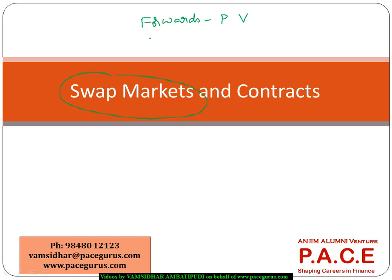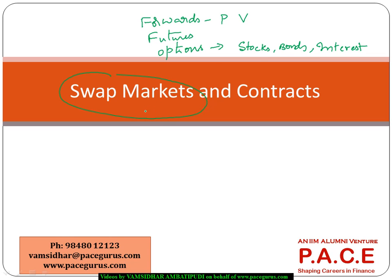We previously looked at pricing and determination of value for futures and options, including various models for valuing different types of options: options on stocks, bonds, interest rates, and even interest rate caps and floors. Now we will look at the other set of derivative instruments, which are typically called swaps.